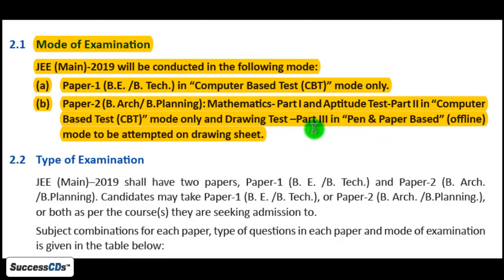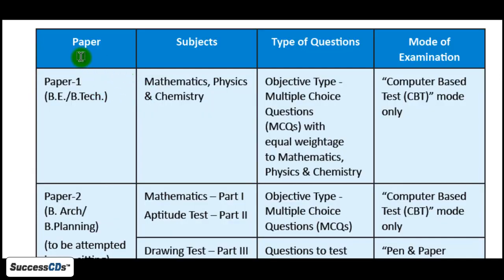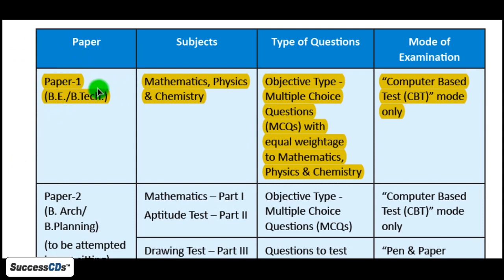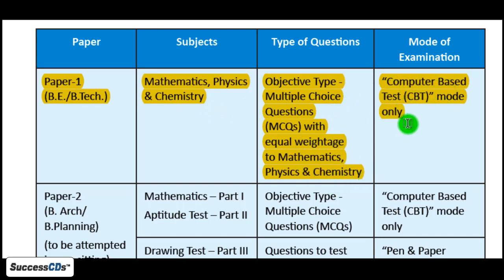If you want more information about how to attempt a computer-based test, we have made a separate video where we have discussed the complete procedure. Now let us discuss the pattern of the exam. Paper 1 is for those appearing for a BE or B.Tech degree. The subjects will be mathematics, physics, and chemistry — objective type multiple choice questions with equal weightage to all three subjects, in computer-based test mode only.